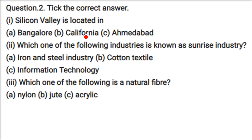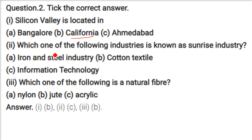Silicon Valley is located in California, USA. Which one of the following industries is known as a sunrise industry? Information technology is a sunrise industry, along with certain other industries like hospitality and knowledge industries.